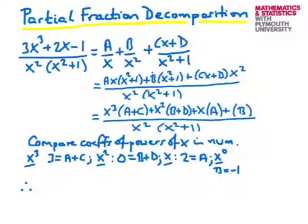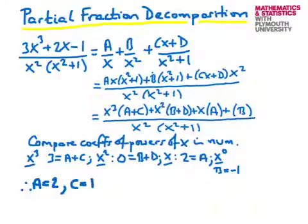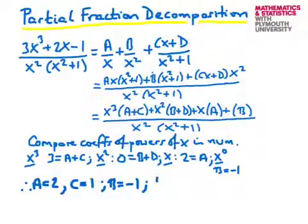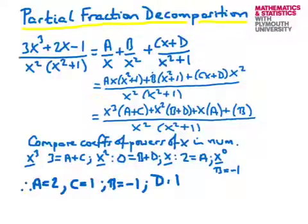Therefore, since a = 2 and a + c = 3, this tells us c = 1. b has already been calculated to be −1. And since b + d = 0, this means d = 1. So these are the results for the coefficients, and we can now substitute them into our initial partial fraction decomposition.